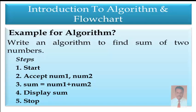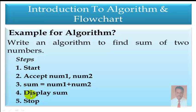Now we are going to see an example for algorithm. Write an algorithm to find the sum of two numbers. We need two values to add, so we start the algorithm. Step 1: Start. Step 2: Accept two values, Num1 and Num2. Step 3: Add the two values and store the result. Step 4: Display the result to the user. Step 5: Stop. In all algorithms, the first step is Start and the last step is Stop.